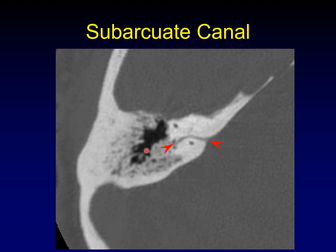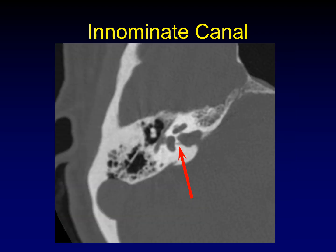In Europe, this is called the petromastoid canal — that's a synonym for the subarcuate canal. This very straight, very fractured-looking object is called the innominate canal. It carries the singular nerve between the internal auditory canal and the vestibule. This may also be called the singular canal because it carries the singular nerve, and frankly, innominate canal is a lousy name.